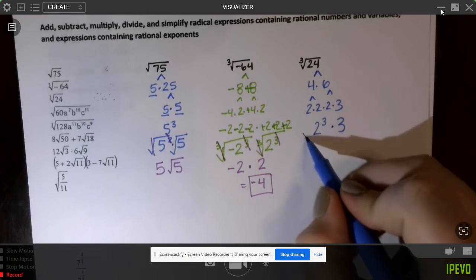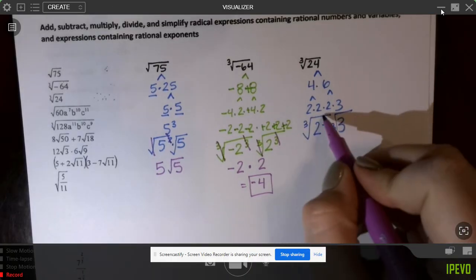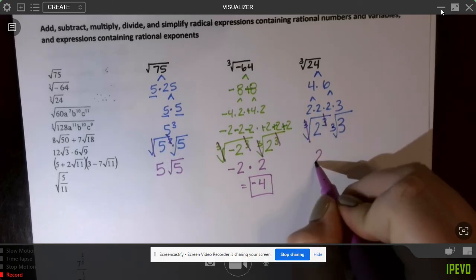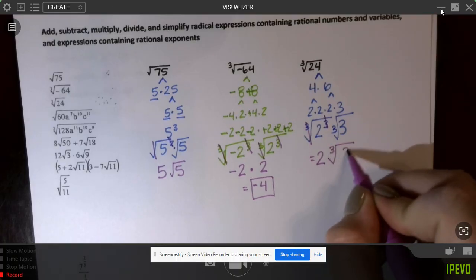and when we go and take the cubed root of those things, we notice that it cancels for our 2 here, and we're left with a 2 on the outside, but our 3 doesn't have enough to get out from under our radical, so we're left with 2 cubed root of 3.